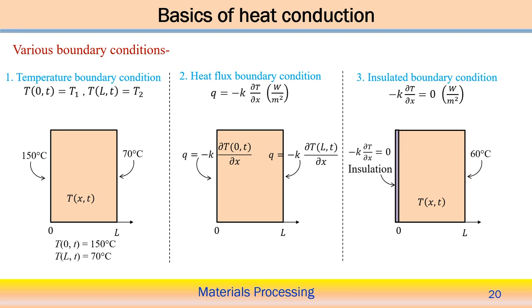Now we look into various boundary conditions observed in practical problems. The first case is the temperature boundary condition. In a one-dimensional problem: at x = 0 at time t, the temperature equals T₁, assumed here to be 150°C. The other boundary condition: at x = L at time t, the temperature equals T₂ = 70°C. This is the general form of the temperature boundary condition — the spatial variation of temperature from 150°C at one surface to 70°C at the other.